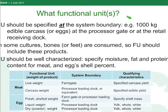Turning to the question of the functional unit, we have chosen that it should be something like 1,000 kilograms of carcass, edible carcass, or egg at the processor gate. And as mentioned, in some cultures delicacies such as chicken feet are consumed, and so the functional unit should include those components. There are some additional specifications around the functional unit that we think are important — for example, specifying not just the carcass weight but also the edible yield of the hot carcass, so that subsequent harmonization of studies is more feasible.